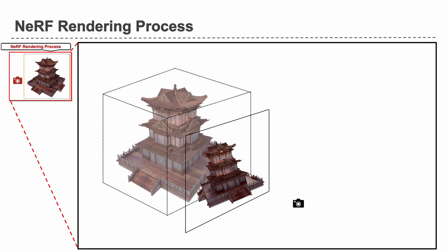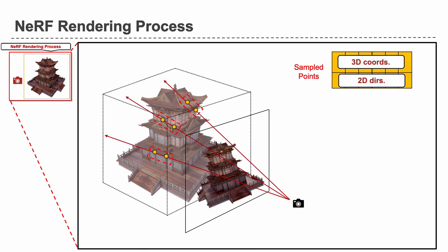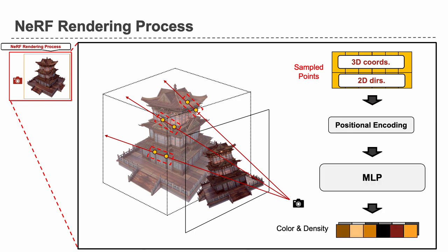To render an image from a novel viewpoint, we cast rays to each pixel and sample points along the rays. These sampled points are encoded to high-dimensional features, and they are fed into an MLP to obtain the color and density information.